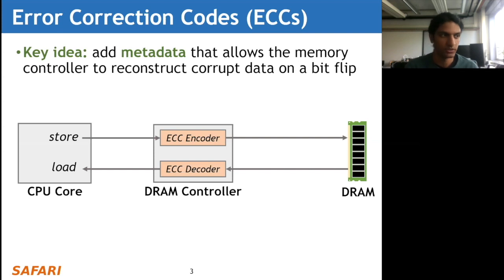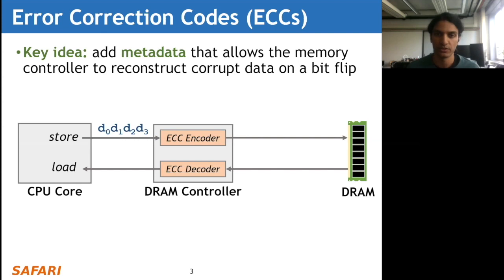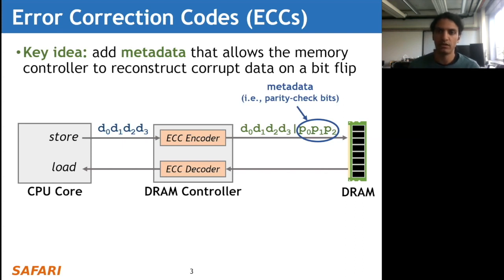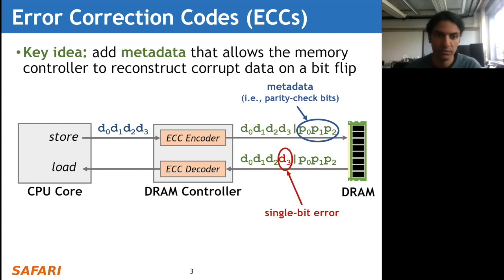Whenever the CPU core wants to do a load or store operation, it first goes through the error correcting logic within the memory controller before going to DRAM. For example, in the store data path, when the CPU core wants to store a piece of data - let's say a four-bit vector of d0 through d3 - this data first goes through the ECC encoder inside the DRAM controller. The encoder adds additional bits called metadata or parity check bits, and this metadata allows the ECC logic to figure out what happens when an error occurs. The DRAM actually stores this expanded representation including all seven bits.